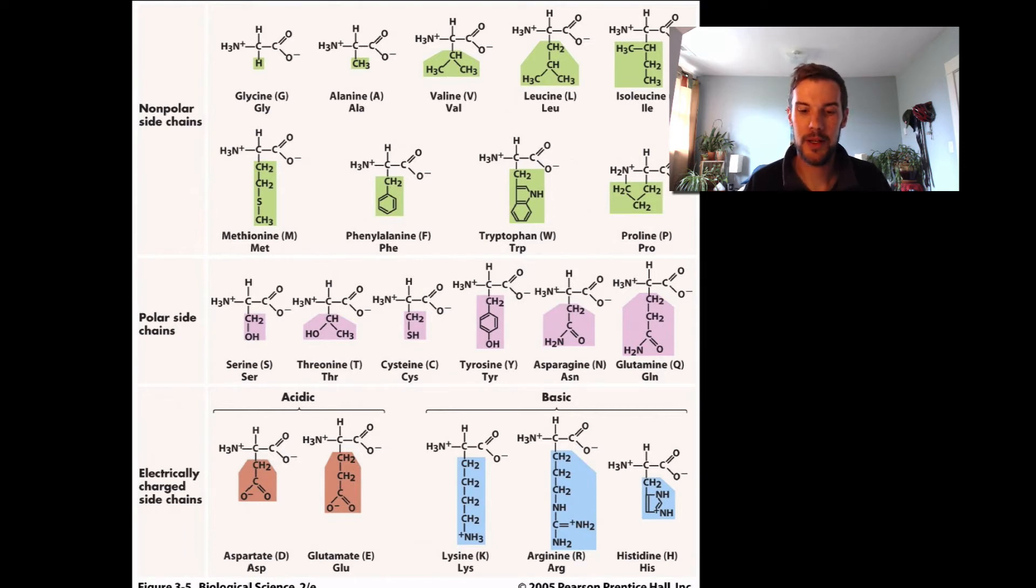These are the different types of R groups. You can see they're all different and they will act differently based on whether they're non-polar—so they do not like to be in water—polar, so they will like to be in water and are easily dissolvable, or they have electrically charged side chains.